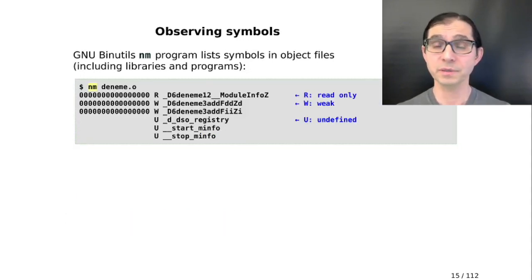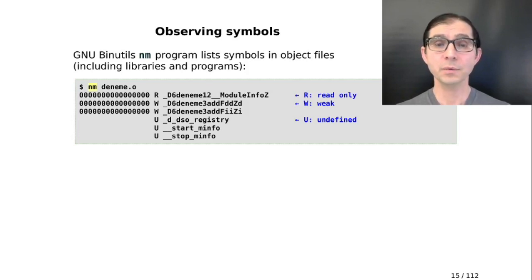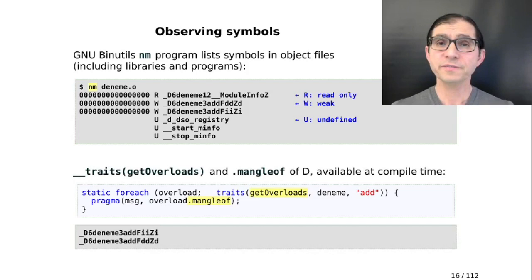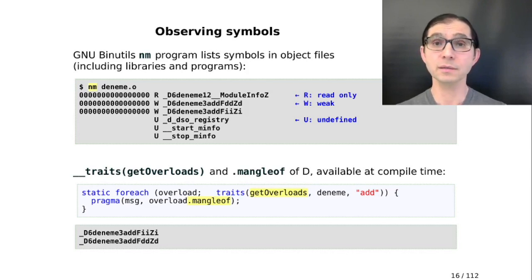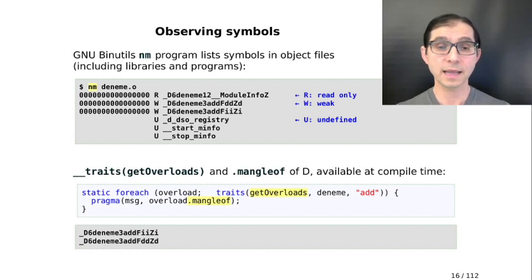There are other ways of observing symbols. GnuBinUtils' NM program lists symbols in object files, libraries, or programs and gives more information. In this case, we define the two add symbols as weak symbols, but the DDSO registry is an undefined symbol, which probably our module wants to call out to somewhere else. If you need to get the symbols at compile time, you can write a static foreach loop going through all overloads of the name add of module DENEME, and .mangleOf gives you the mangled name of your symbols.